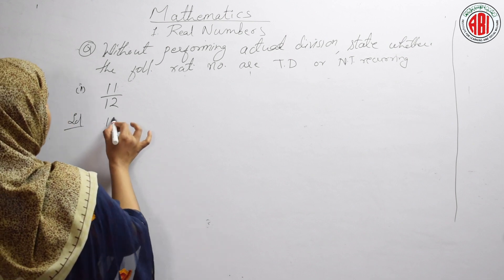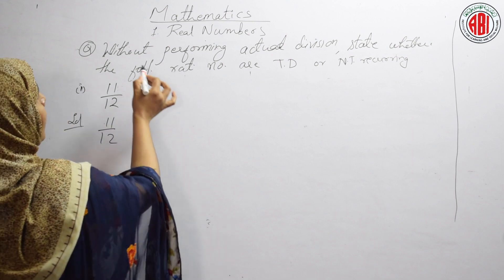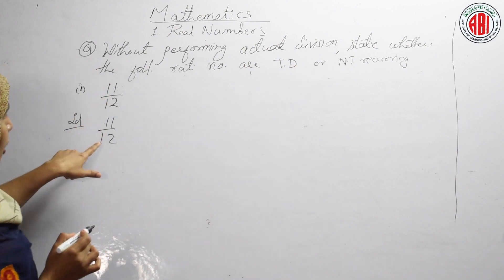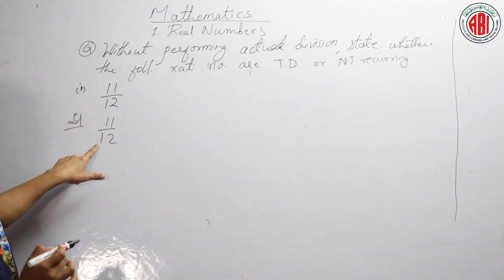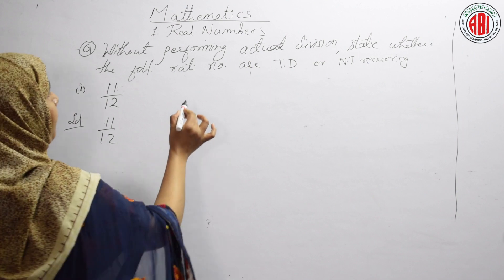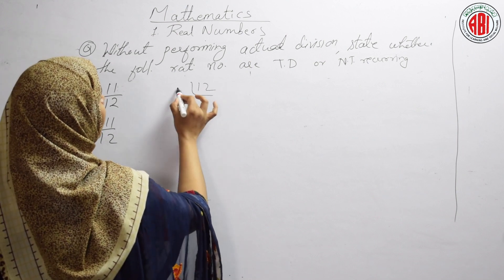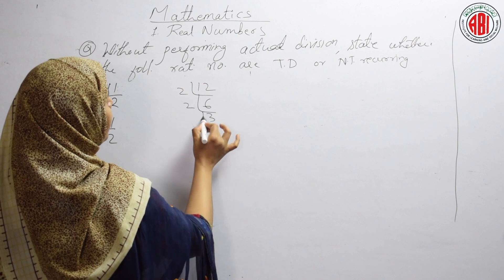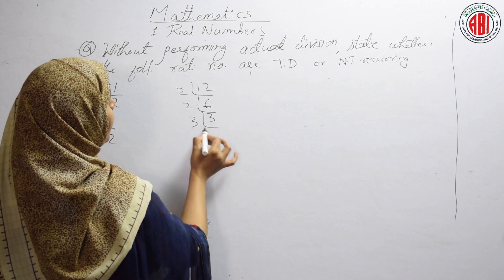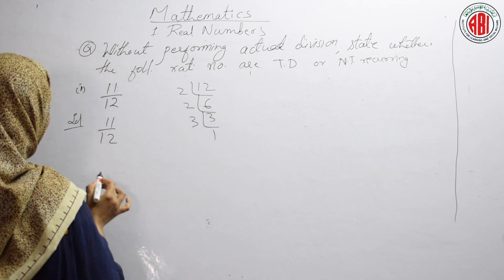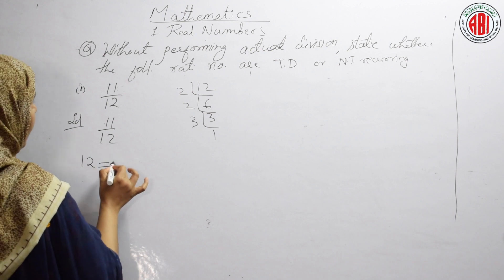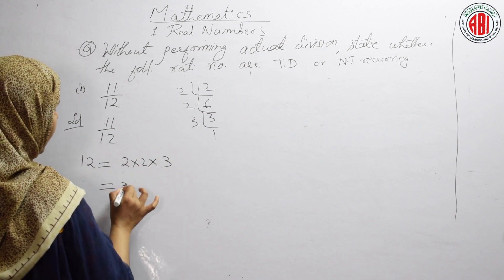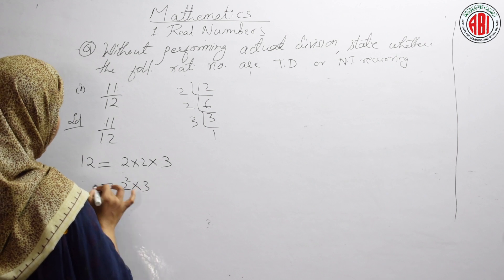So how to do this without performing actual division of P by Q? This divisor you have to factorize. 12 you have to factorize: 2 times 6 is 12, 2 times 3 is 6, 3 times 1 is 3. So 12 we can write as 2 × 2 × 3, that is 2² × 3.